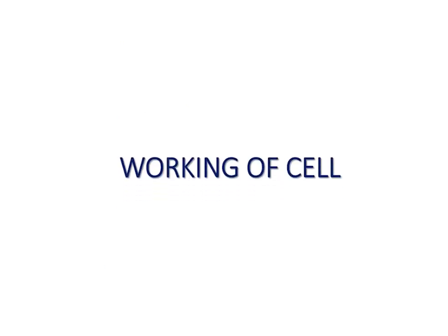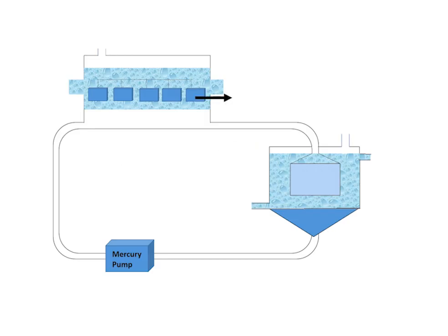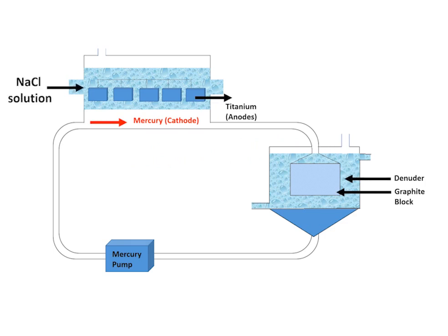Now we are discussing the working of the Kastner-Kellner process. Concentrated solution of sodium chloride, which is called brine, is sent to the upper electrolytic portion, where it is ionized to sodium positive ions and chloride negative ions. On passage of electricity, ions move towards their respective electrodes.